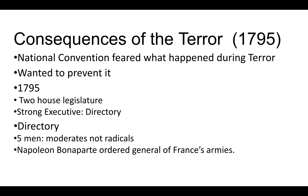The consequences of the Terror mean that by 1794–1795, the National Convention decides they don't want something like the Terror happening again, so they disband and establish a new two-house legislature, similar to the Congress in America. They also put in a strong executive branch — whereas the National Convention had abolished the executive branch by getting rid of the king, they now restore it with something called the Directory. The Directory was made up of five moderate men, and these five men appoint Napoleon Bonaparte to lead France's armies — Napoleon will eventually come to control the Directory, but that's for the next lecture.